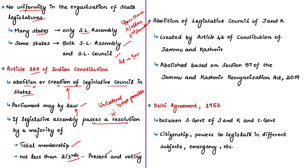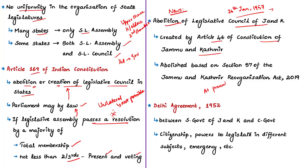This news article is about the abolition of the legislative council of Jammu and Kashmir. The legislative council in J&K was created on 26 January 1957 by Article 46 of the Constitution of Jammu and Kashmir — the date the J&K Constitution was made enforceable. At present, the Indian Constitution applies to J&K, since the temporary provisions under Article 370 were abrogated in August 2019.